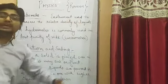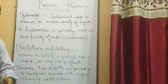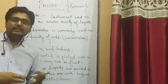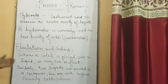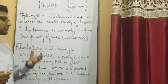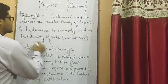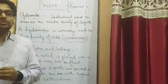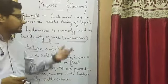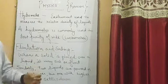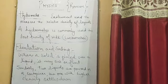A hydrometer is an instrument used to measure the relative density of a liquid — it compares the density of a particular liquid with the density of water, telling you whether the liquid is denser or less dense than water. A hydrometer is commonly used to test the purity of milk in large factories or companies. This type of hydrometer is known as a lactometer. So a lactometer is a kind of hydrometer — it is a device used to test the purity of milk.